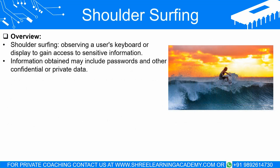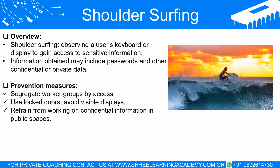Shoulder surfing occurs when an individual is able to observe a user's keyboard or view their display, enabling the observer to gain access to confidential, private, or otherwise sensitive information, including passwords. To prevent shoulder surfing, it is common practice to segregate worker groups by their access to sensitive information, which may involve the use of locked doors. Users should avoid positioning their displays in a manner that makes them visible from outside through windows or from walkways and doorways. It is also advisable to refrain from working on confidential information in public spaces, such as coffee shops or airplanes.